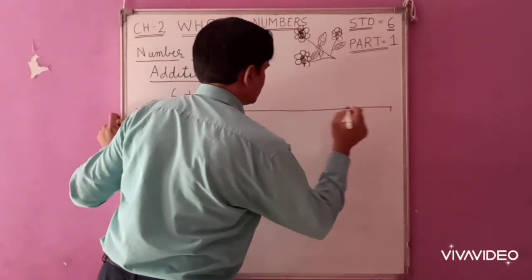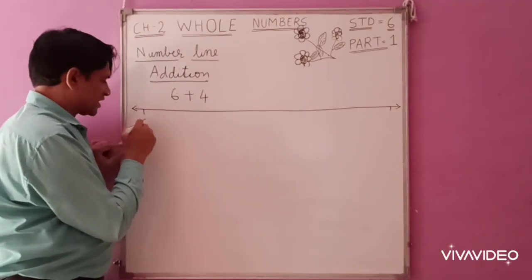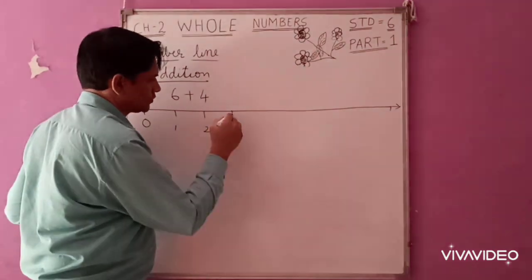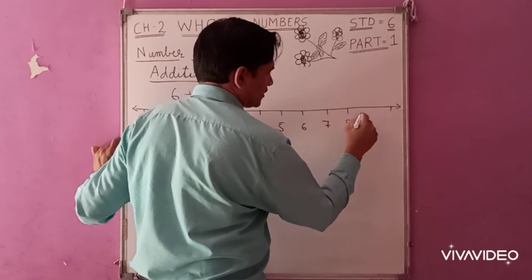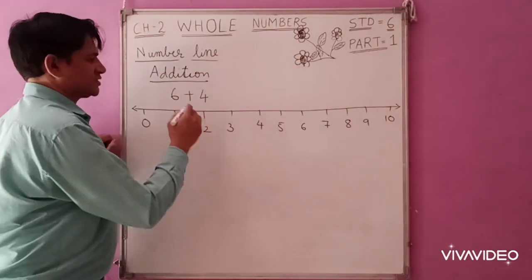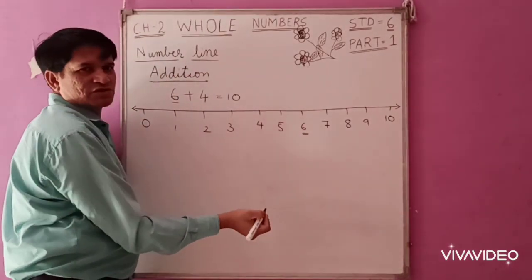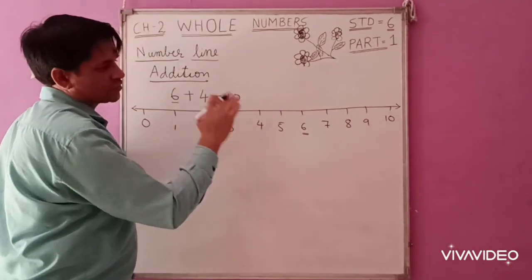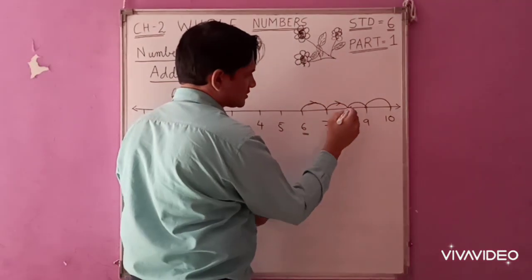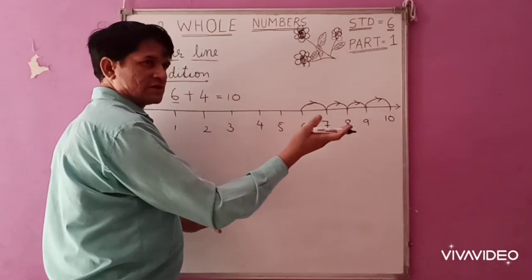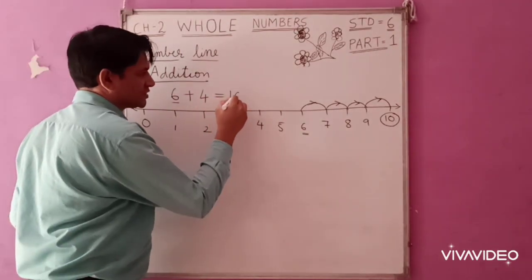First, draw a number line and put arrows on both sides, then start with 0: 1, 2, 3, 4, 5, 6, 7, 8, 9, 10. Now, 6 plus 4 is equal to 10. The first number is 6, so we start at 6 and go 4 steps to the right. Circle the answer — 6 plus 4 is equal to 10.